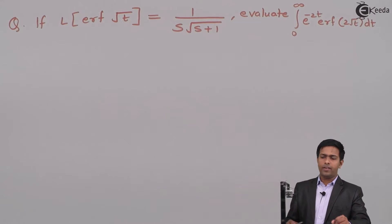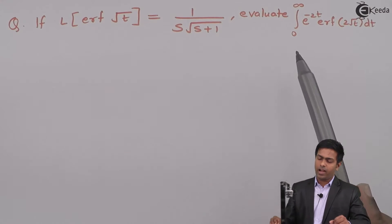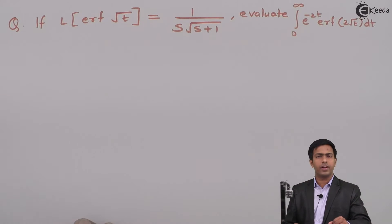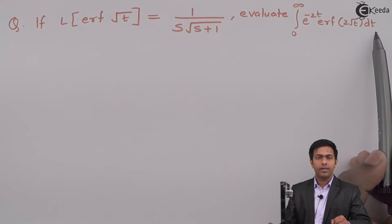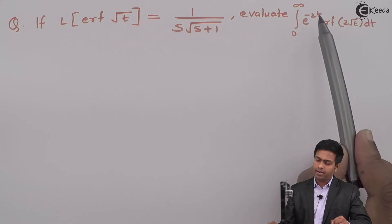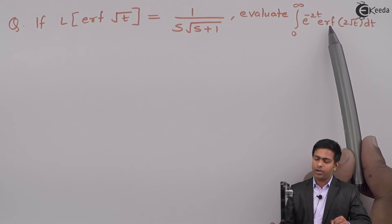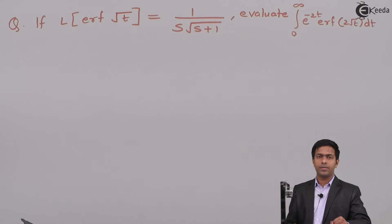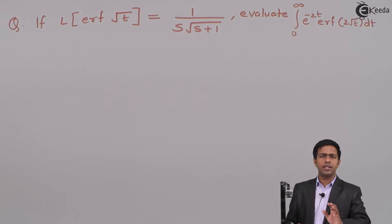Now to get the value of this integration, let's observe the integration. Here we have the limits from 0 to infinity, integration is with respect to t, then we have e raised to minus 2t term and the function is given as error function of 2 root t. If you observe the given question carefully, you can easily identify that this question is exactly similar with the definition of Laplace transform.